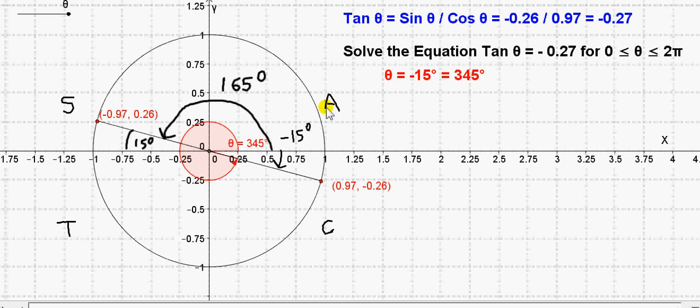Now, even if you've never heard of the CAST rule, you could still work this out. You know that the tan is got by taking sine, the y value of this point, and dividing it by the x value of this point. And you want it to come out to be negative. So in what quadrant will this ratio come out to be negative? Well, it's only going to come out to be negative in the quadrant where the x and y values have opposite sign.